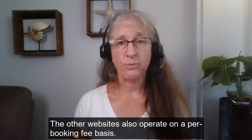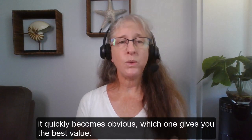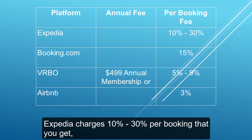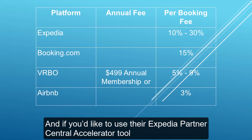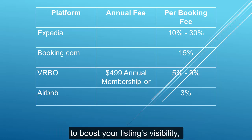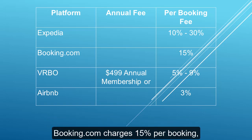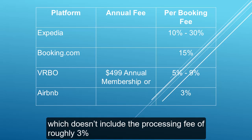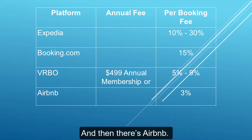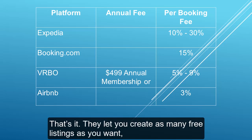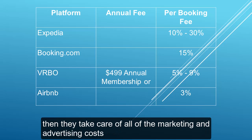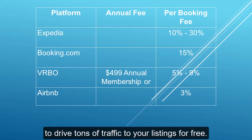The other websites also operate on a per-booking fee basis, but when you compare them side by side it quickly becomes obvious which one gives you the best value. Expedia charges anywhere from 10% to 30% per booking depending on the location of the property, and if you'd like to use their Expedia Partner Central Accelerator tool to boost your listing's visibility, you can pay even more. Booking.com charges 15% per booking, which doesn't include the processing fee of roughly 3% from your payment processor that you have to hire separately. And then there's Airbnb — they charge hosts a flat 3% fee on every booking. That's it. They let you create as many free listings as you want, and then they take care of all the marketing and advertising costs to drive tons of traffic to your listings for free.